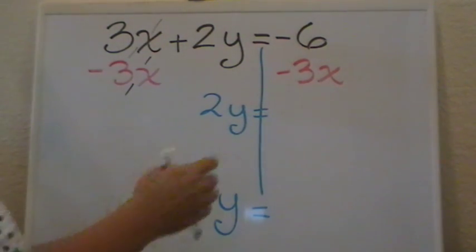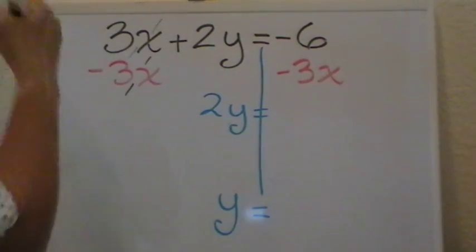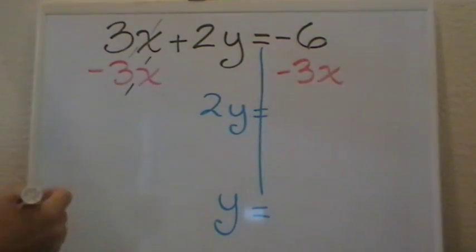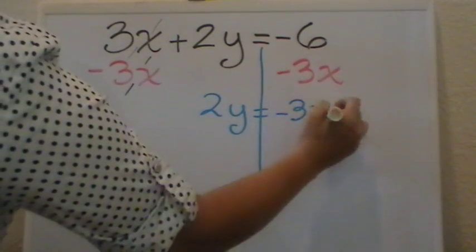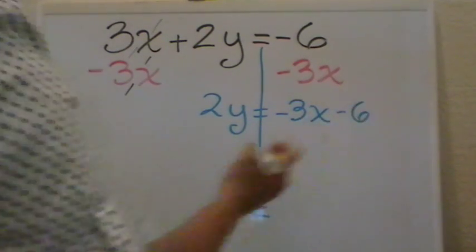So what I'm going to do is I'm going to write both of them without making any operations next to each other. So negative 3x, negative 6.